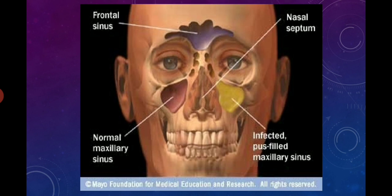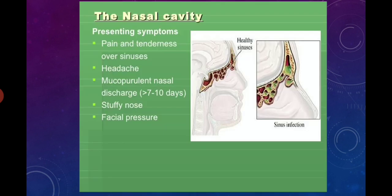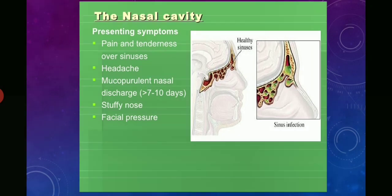The sinuses include the frontal sinus, maxillary sinus, and nasal cavity. In sinusitis, symptoms include pain and tenderness over the sinus or headache, mucopurulent nasal discharge for more than 7–10 days, stuffy nose, and facial pressure. As you can see in this diagram, sinus infection is shown. There is a clear difference between a healthy sinus, which has no mucus, and an infectious sinus, which has presence of mucus in the sinus area.